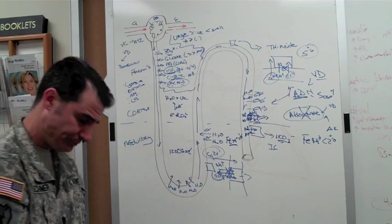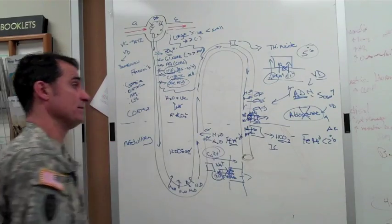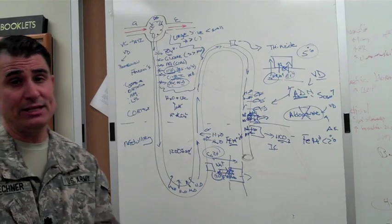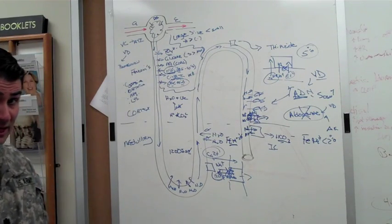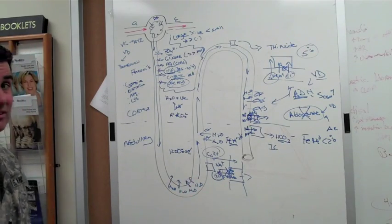There is one diuretic that works at the level of glomerulus, which is an osmotic diuretic, which would be the same as giving too much glucose, and that's called mannitol.